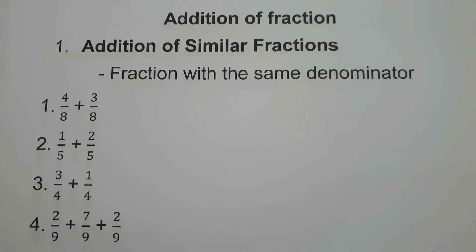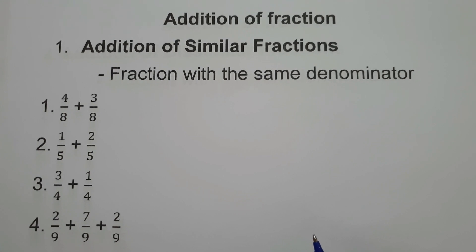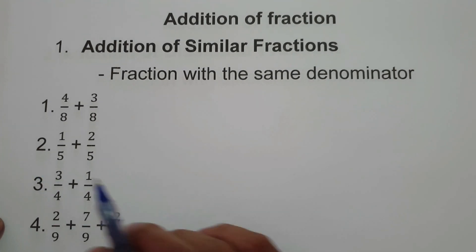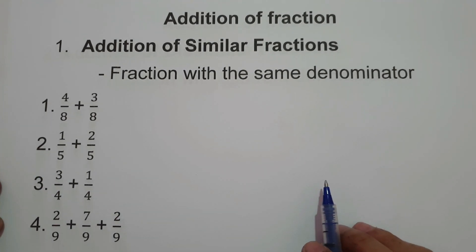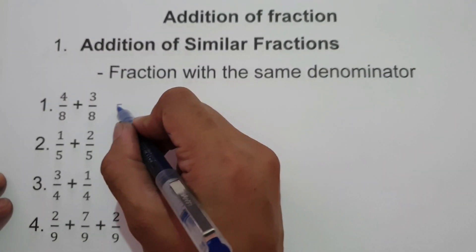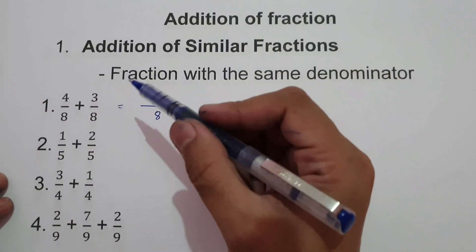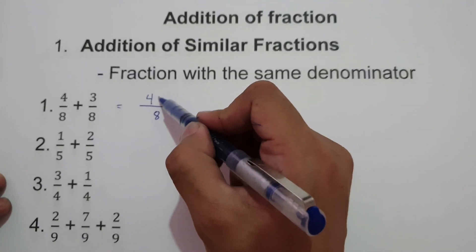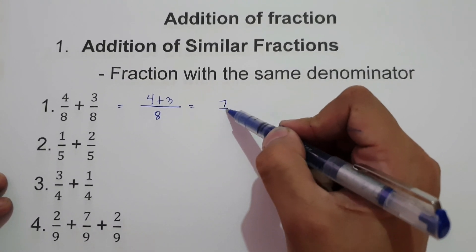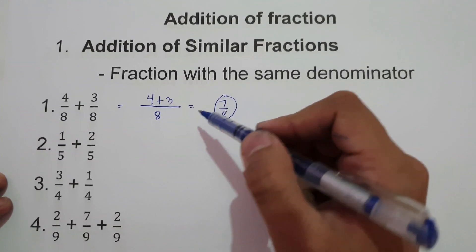How to add similar fractions? When we say similar fractions, those are fractions with the same denominator. If we are going to add fractions with the same denominator, we just simply copy the denominator and then add the numerator. For example, 4 over 8 plus 3 over 8. We have the same denominator, so we just simply copy the denominator, that is 8. And then 4 plus 3, so we're going to have 7 over 8.